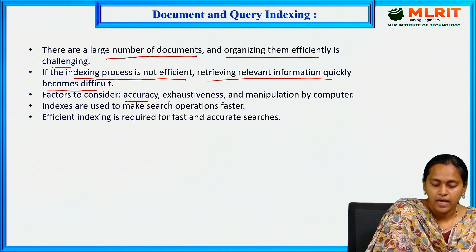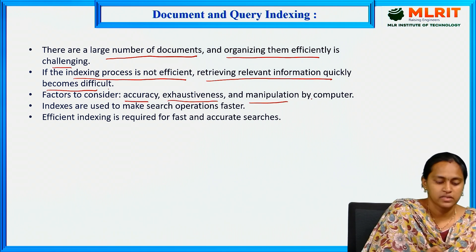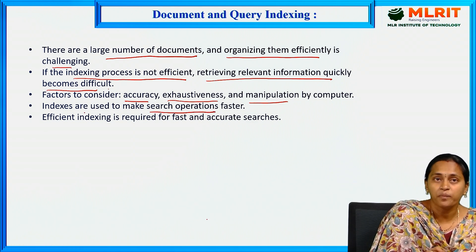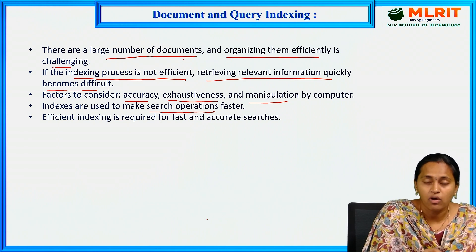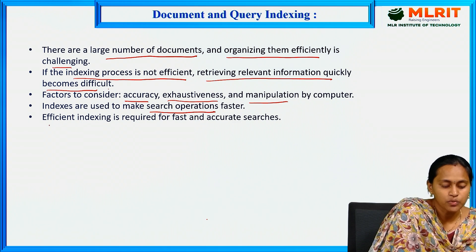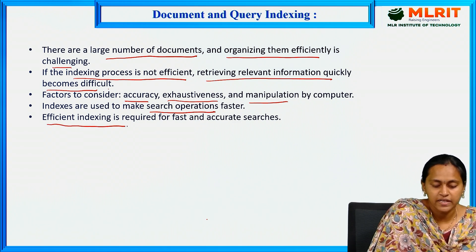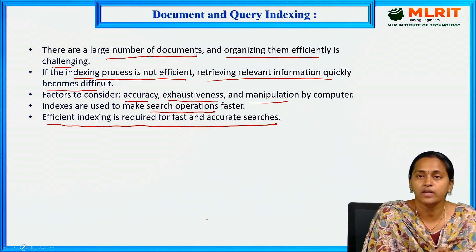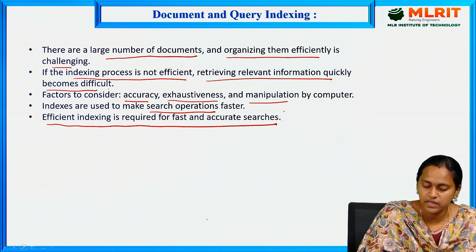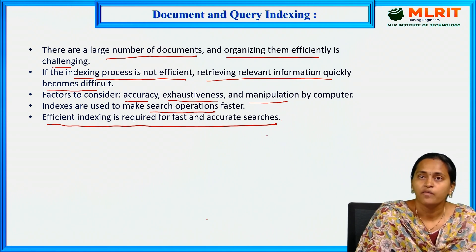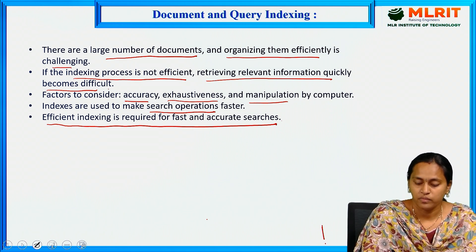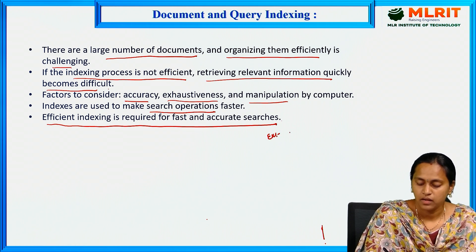The key factors are accuracy, exhaustiveness, and manipulation by computers. Indexes are used to make search operations faster. To resolve this issue, we need efficient indexing for fast and accurate searches. For example, take a library — we have a number of books and we must organize them in an organized manner. If there is no proper organization, we will not get the correct book. Similarly, a slow database will not return data in the correct way.